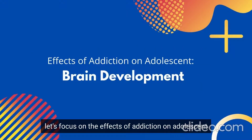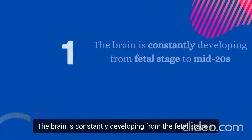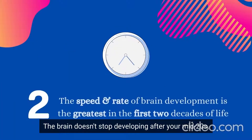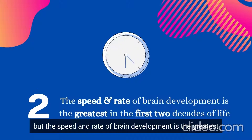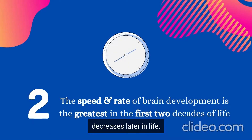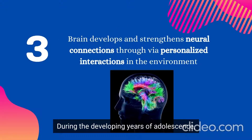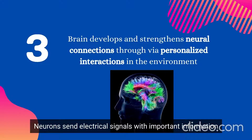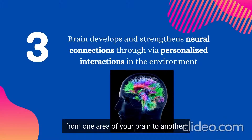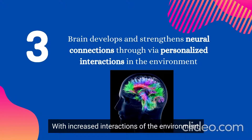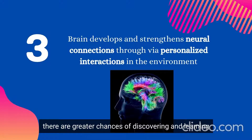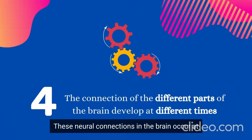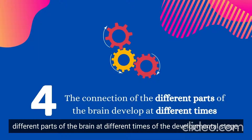The brain is constantly developing from the fetal stage in the mother's womb into your mid-20s. The speed and rate of brain development is greatest in the first two decades of life, and decreases later in life. During adolescence, the brain develops and strengthens neural connections through interactions in the environment. Neurons send electrical and chemical signals from one area of the brain to another, and greater environmental interactions create greater chances of forming neural connections.